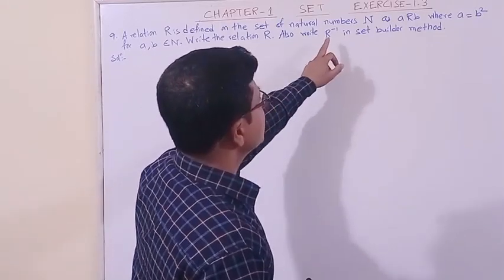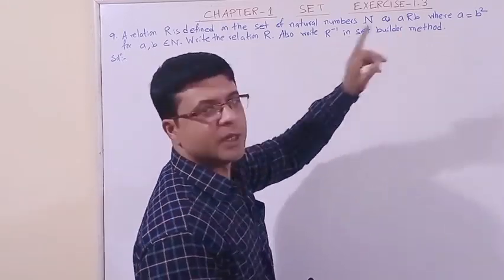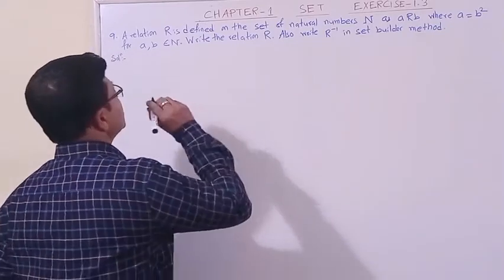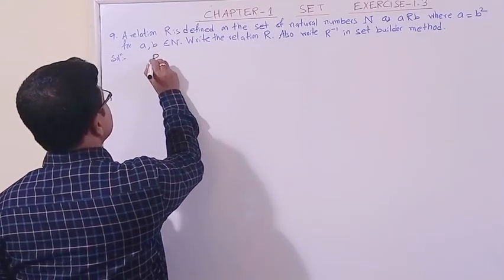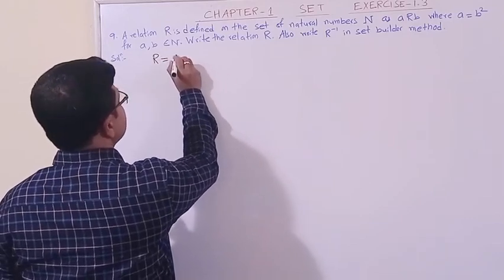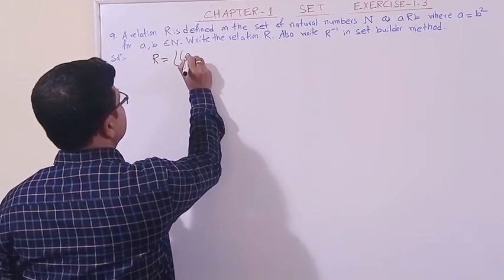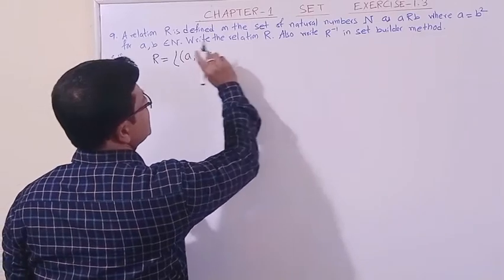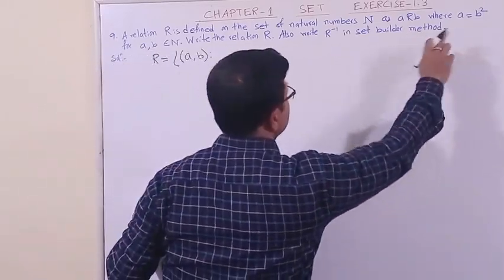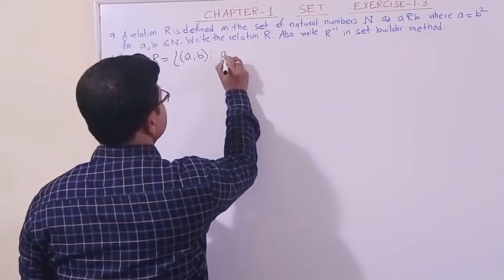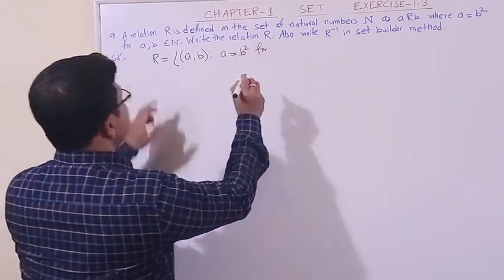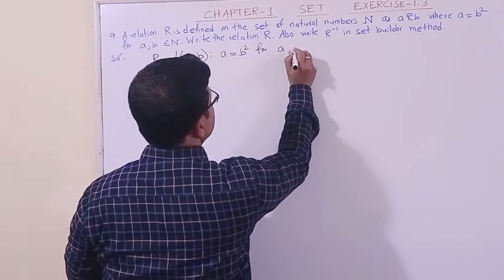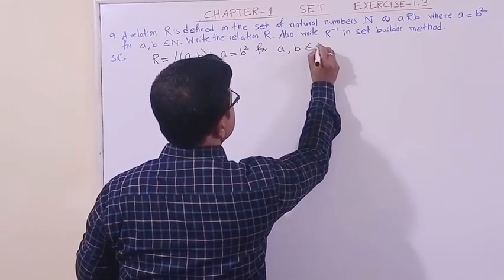First, let me write this. The relation R is the set of ordered pairs (a, b) such that a equals b squared, for a and b both belonging to the set of natural numbers. Now let us write the relation in tabular method.